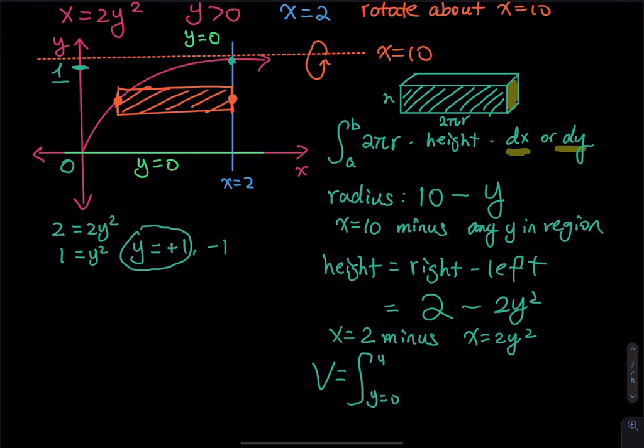So y goes from 0 to y equals 1. And then we have 2π, the radius, 10 minus y. And then the height, that is 2 minus 2y squared. And then dy. So this is our integral for this revolution axis.